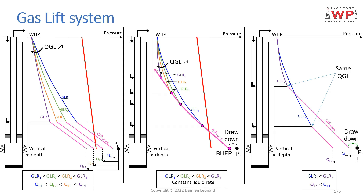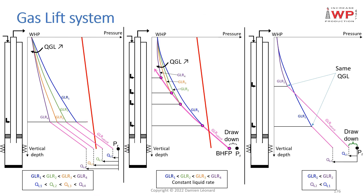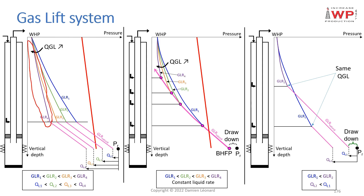In order to fully understand the mandrel spacing design, it is important we discuss first the gas lift system. Here we have three different schematics. On the left part of the slide, I'm showing a pressure profile inside a well when I keep the same injection depth and increase the gas lift rates. If I increase the gas lift rates, the pressure profile in the well moves from the blue pressure profile at the top, when the gas lift rate is lowest, to the purple pressure profile where the gas lift rate is highest.